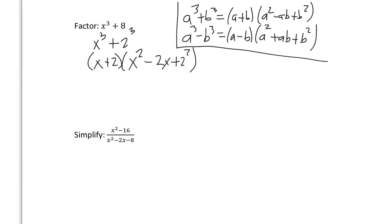It's important to memorize these formulas. To help remember: for the sum, the signs go plus, then negative (changed sign), then always plus at the end. For the difference, it's negative, change to plus, and always plus at the end. So as long as you memorize one formula, you can get the other by playing with the signs.